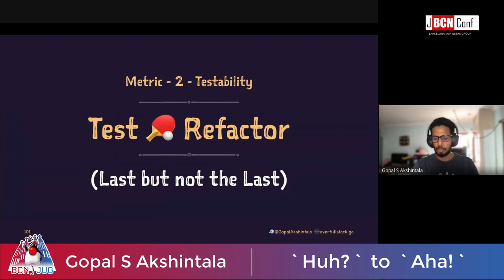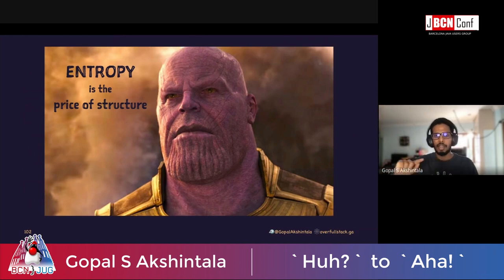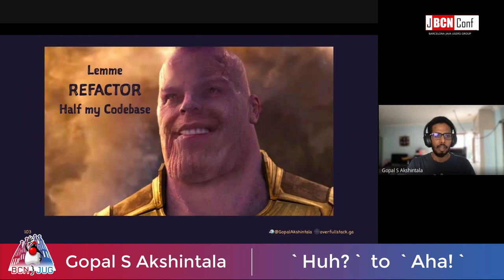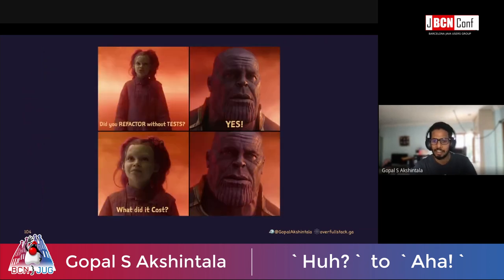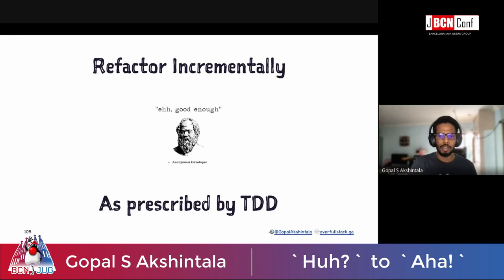Tests should not be an afterthought — they should always happen together as you refactor, with a ping-pong TDD cycle. Entropy is inevitable: as people add more features, code base entropy increases. But our aim is that the rate of increase should be logarithmic rather than linear or exponential — so over time it doesn't go out of our hands. Don't go ahead and refactor half your code base all at once, especially without tests. Always refactor incrementally as prescribed by TDD, always have a test to back up your logic, and then improve it incrementally.